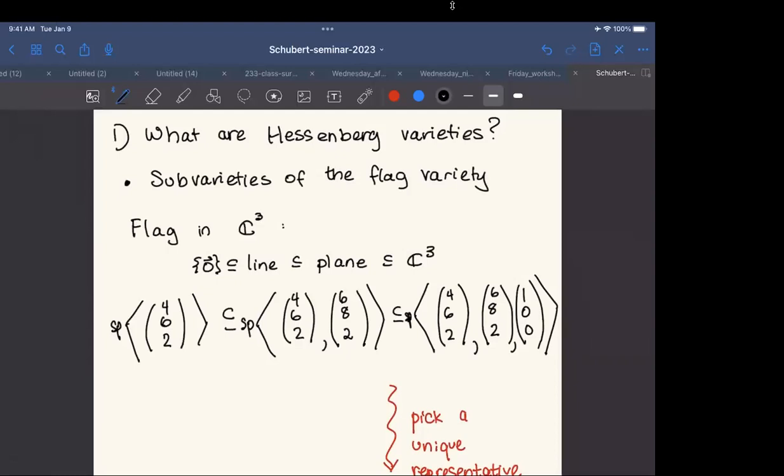So a flag is a line that contains the origin that is contained in a plane that is contained in a three-dimensional space. I can think of it as a vector contained in, or a choice of a vector that spans the line that I then add another linearly independent vector to span the plane, that I then add another linearly independent vector to span the three-dimensional space. This is fully accurate, but somewhat inconvenient because it leads to a lot of redundancy in the choice of spanning vectors at each stage.